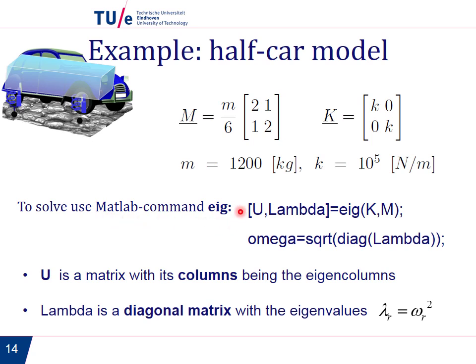These two lines here are code lines from a MATLAB script. The capital U is a matrix with the eigencolumns in the columns, and λ is a diagonal matrix with lambdas in the diagonal. Since we know that ω is the square root of λ, we need to write this to retrieve our omegas.